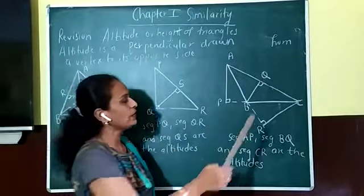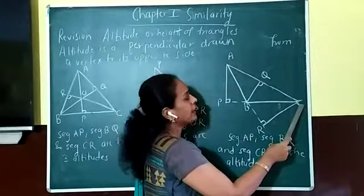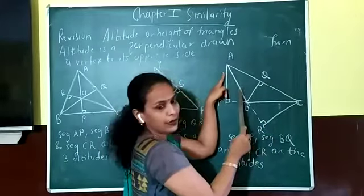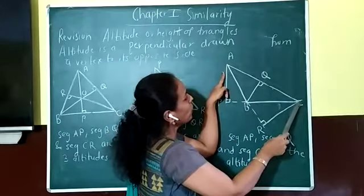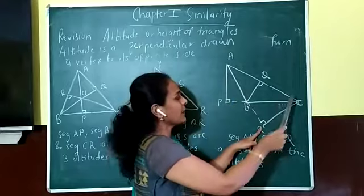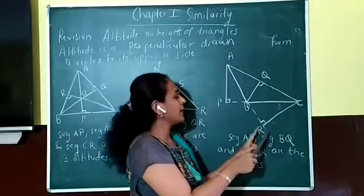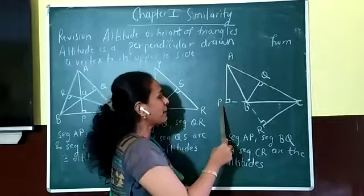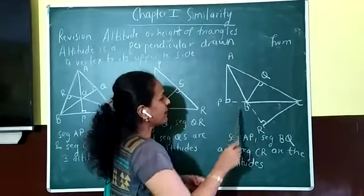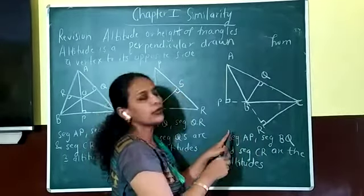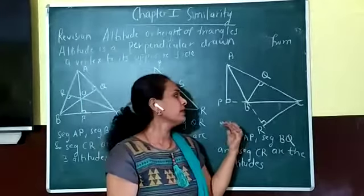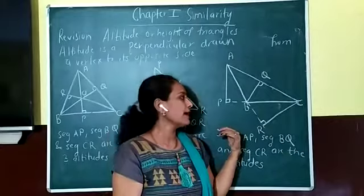The third altitude has to be drawn from C. Again, I have to extend it. AB is the side opposite to C, but from C I cannot draw a perpendicular directly, so I have to extend this side. The three altitudes are AP, BQ, and CR. If you extend these three altitudes, you will see that the orthocentre lies in the exterior of an obtuse angle triangle.